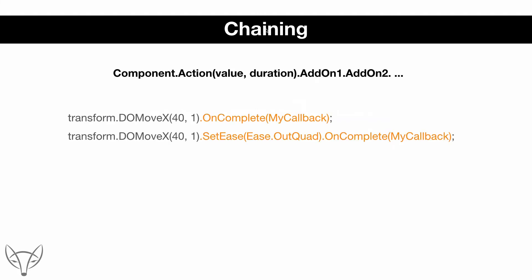There is something called chaining in DoTween — that is when you have an animation and you add on one or more specifiers. For instance, you can add a specifier called OnComplete and provide the name of a function to call, so when the animation is done your callback function will be called. Another example uses two add-ons: one for smooth movement using the SetEase specifier, and another callback called after the animation is done.